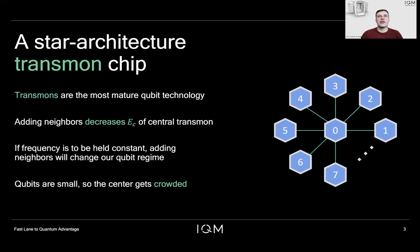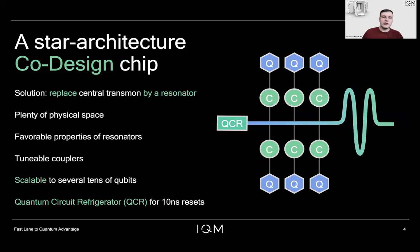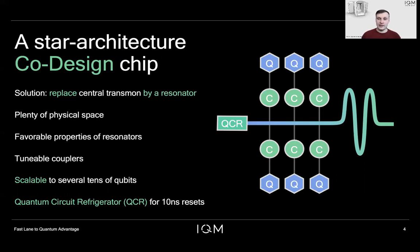So we want to find an alternative solution that allows us to avoid these problems. Our solution for a co-designed star architecture chip is to replace the central transmon with a resonator. The advantages are that there is plenty of physical space to couple qubits to a resonator, as they tend to be large objects. Resonators also have favorable properties such as long coherence times, no SQUID loops that subject them to noise, and they can be manufactured very precisely to a specific frequency.